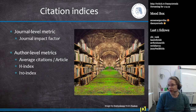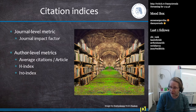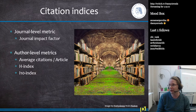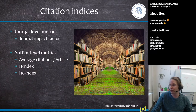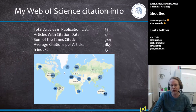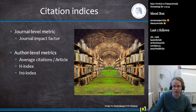We have citation indices because we want to judge scientific output — not just for authors, but also for journals. There's the 'publish or perish' paradigm in science. There are two types of metrics: journal-level metrics (citation scores for journals — Nature has a very high score, while a predatory journal does not) and author-level metrics, such as average citations per article (mine is 18.5), the H-index (mine is 13), and the I-10 index.